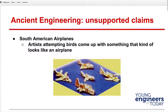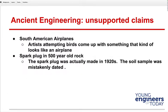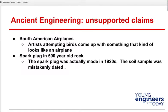A spark plug was supposedly found in a 500-year-old rock, but spark plugs were actually made in the 1920s. When they went back and resampled, they found they had mistakenly gotten into some trash with their sampling. There is no 500-year-old spark plug — no aliens gave it to us.